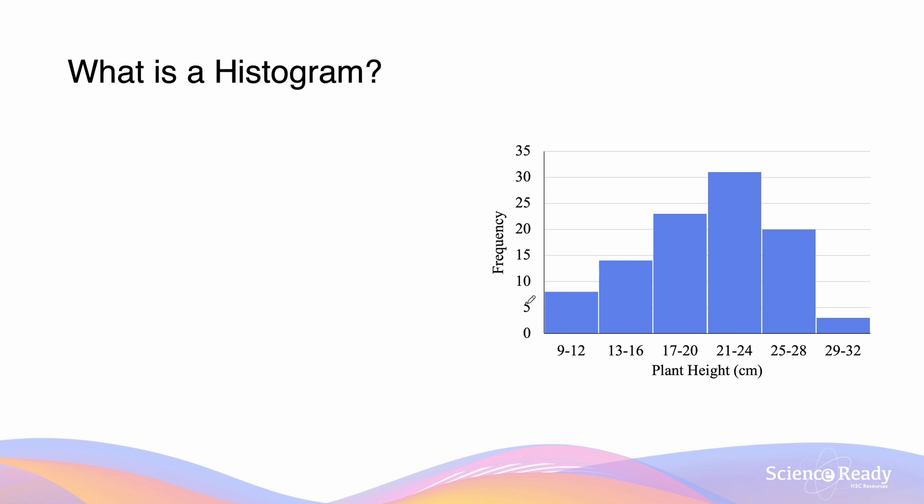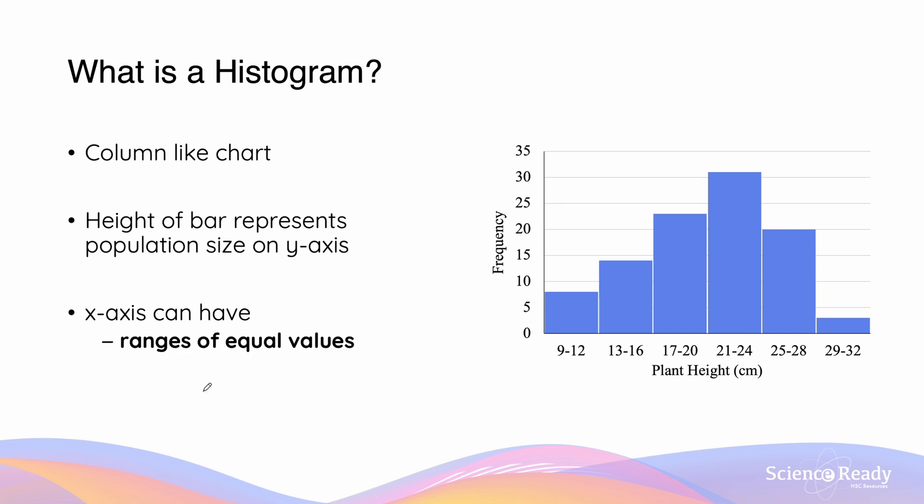How about a histogram? Well, a histogram is a column-like chart that appears similar to the column graph we looked at previously. However, in this case, the height of the bar is going to represent the population size on the y-axis. While the x-axis consists of what we call bins that can either have a range of equal values or it can have discrete values.